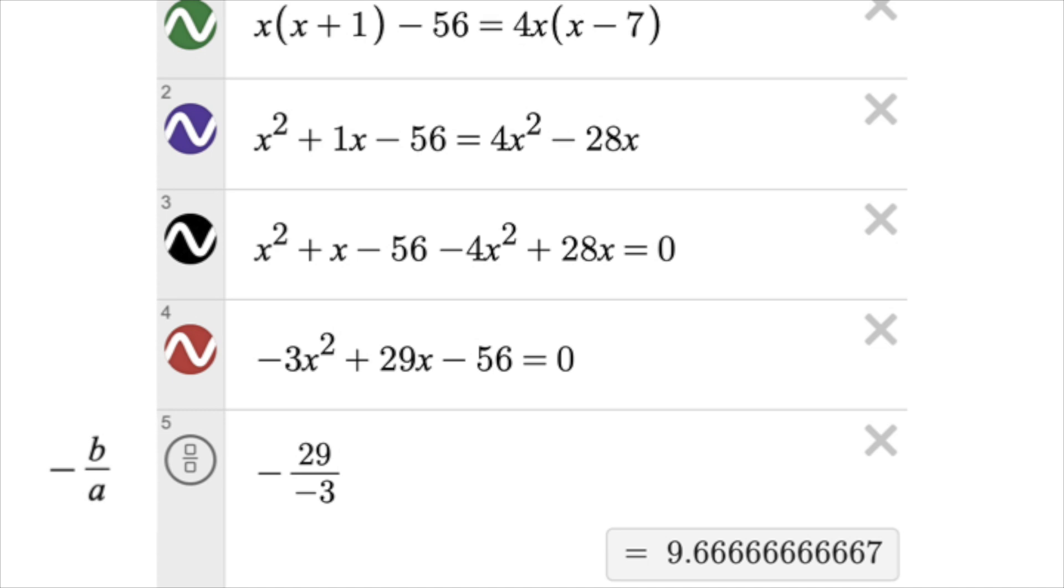One benefit of doing your work on Desmos is that you'll know that you correctly converted the equation to standard form because your new equation will perfectly overlap with the original equation and you get the same answer, 29 thirds.